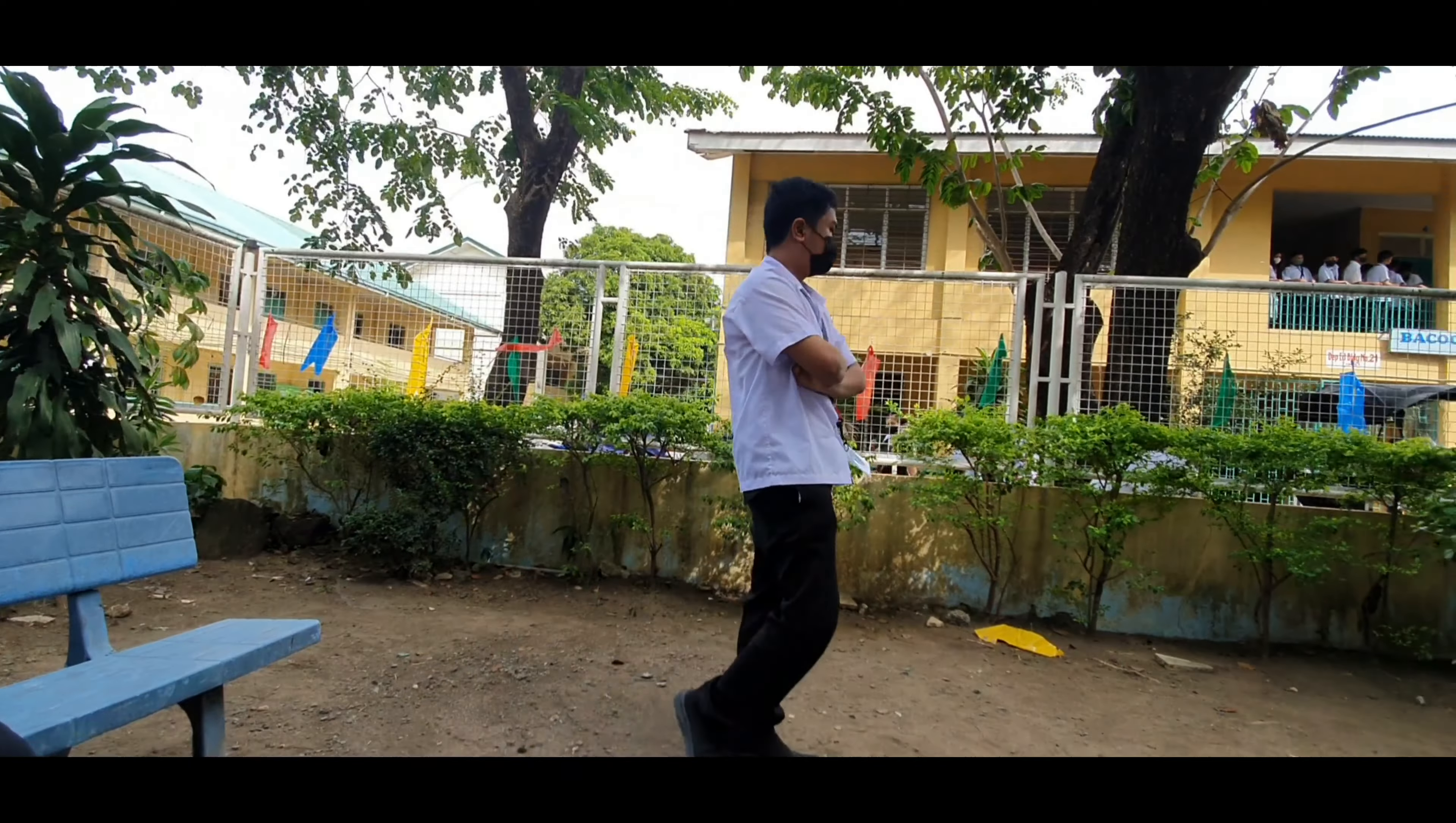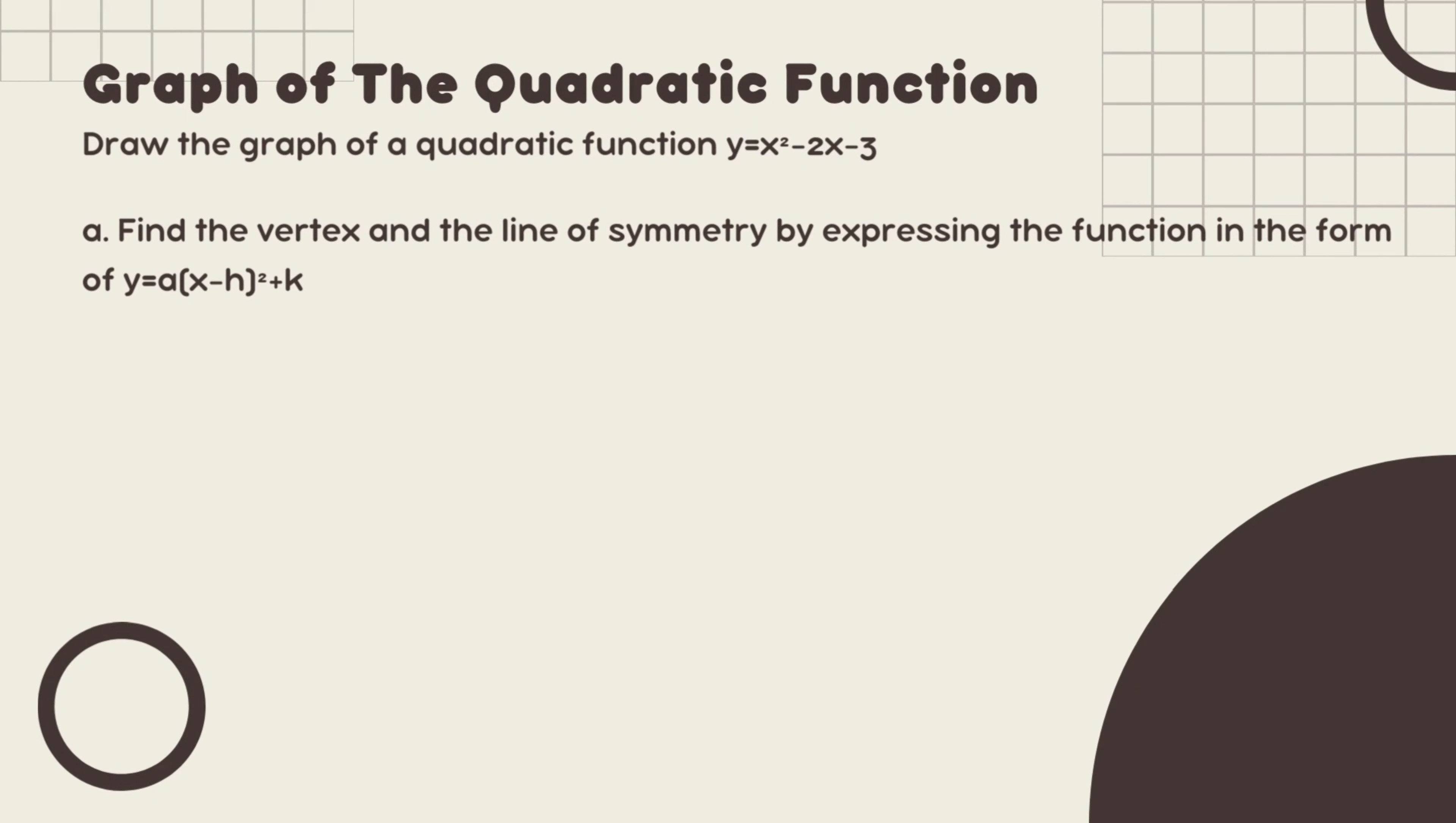In the graph of the quadratic function, draw the graph of the quadratic function y equals x squared minus 2x minus 3. First is to find the vertex and the line of symmetry by expressing the function in the form of y equals a times the quantity of x minus h squared plus k.